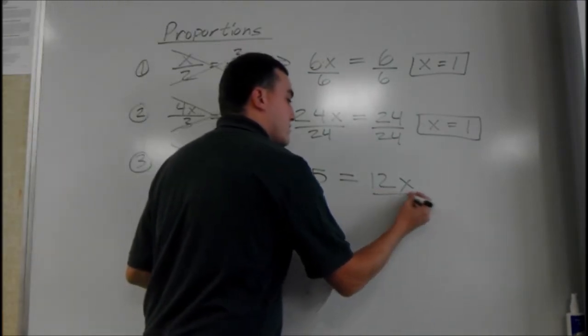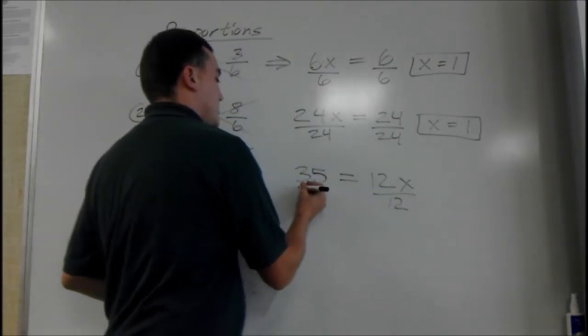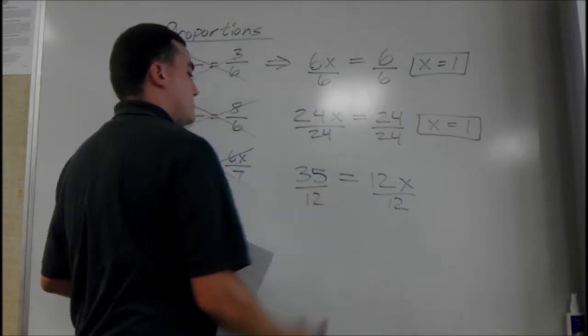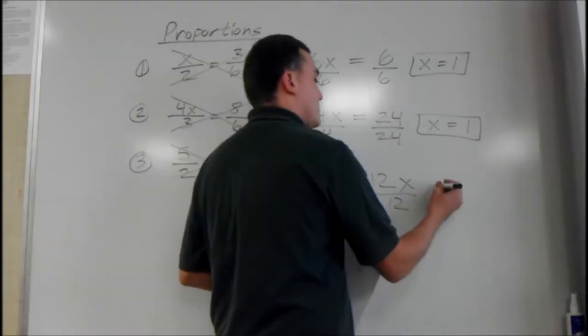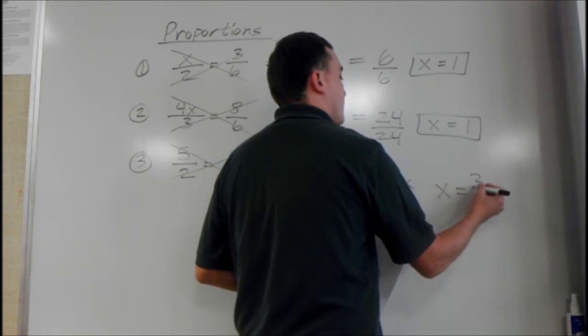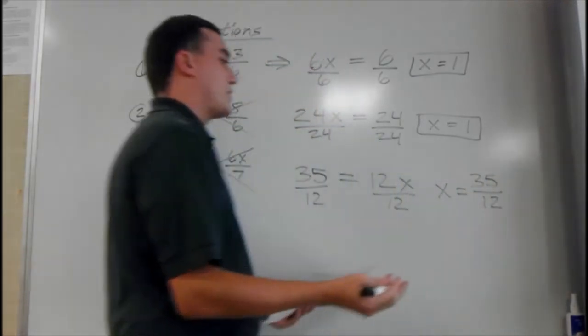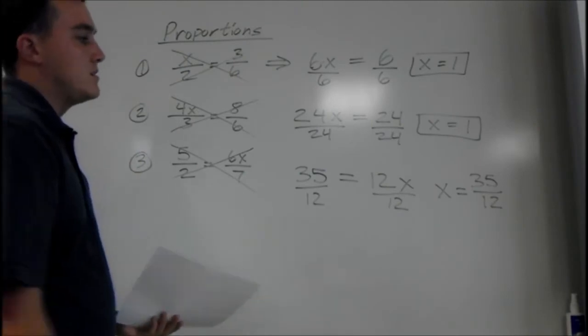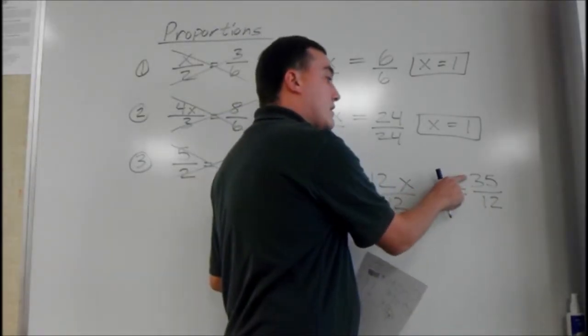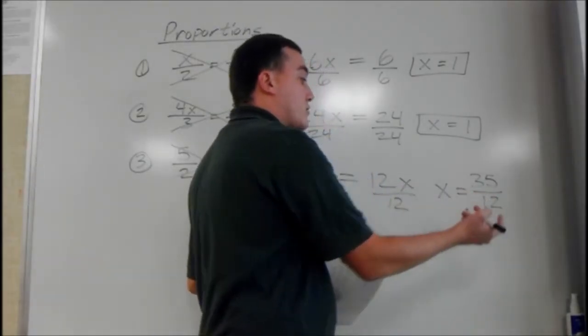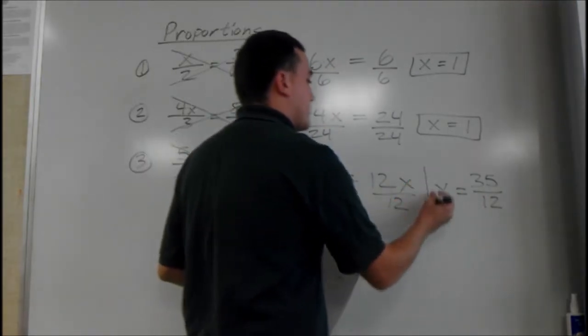Same thing. Divide by 12 on both sides. 35 divided by 12. But they don't go evenly. So that's it for that one too.